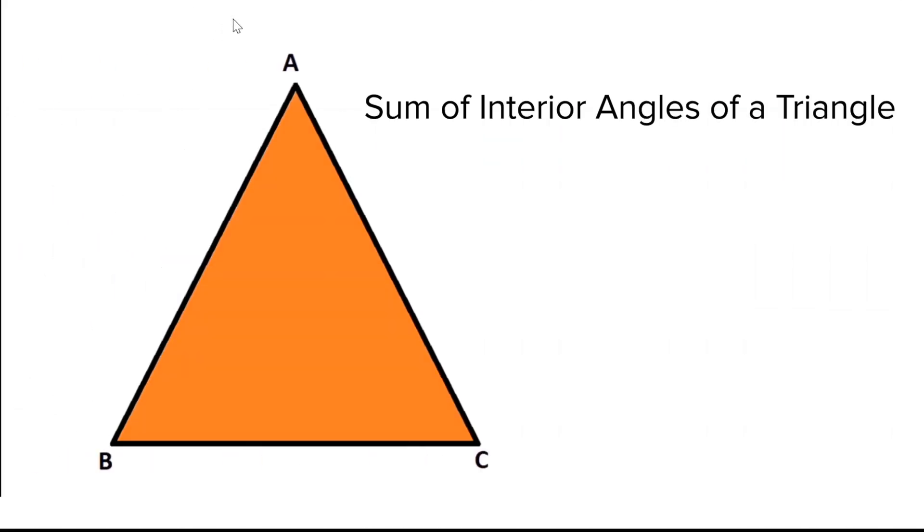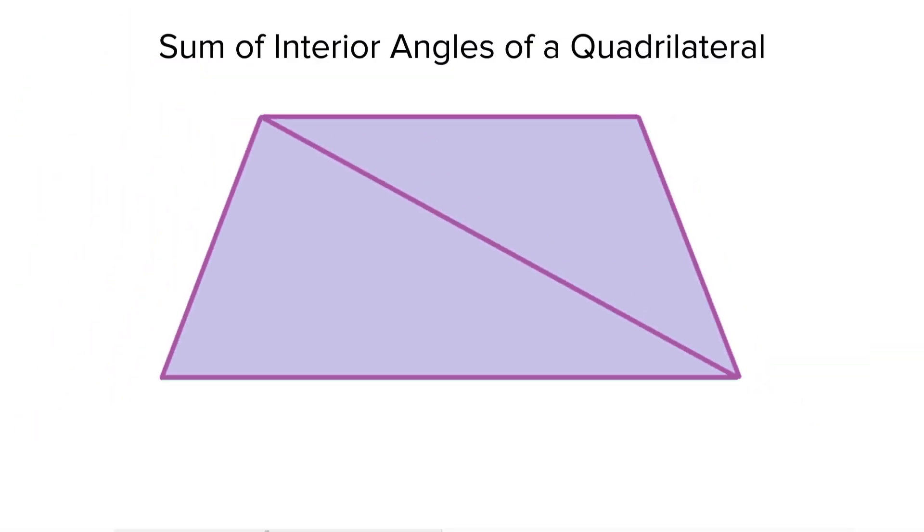But what is the sum of the interior angles of a triangle? This is what we have learned. Correct! 180 degrees. So, what is the sum of the interior angles of a quadrilateral? Now, these are two triangles. It is made up of two triangles. So, the sum is 180 plus 180 equals 360 degrees.